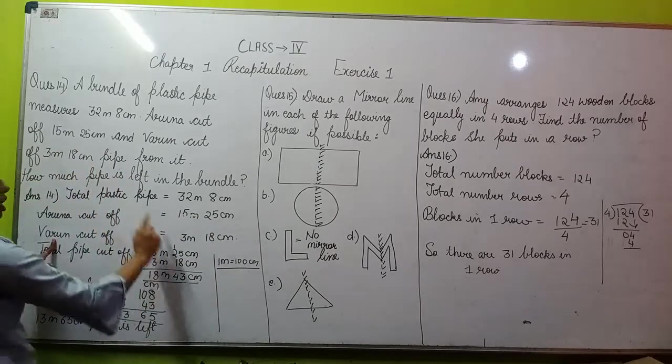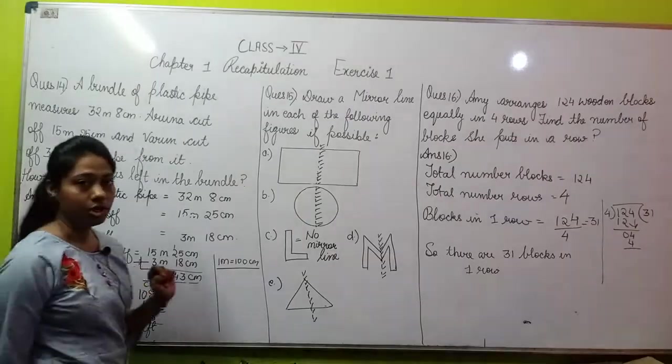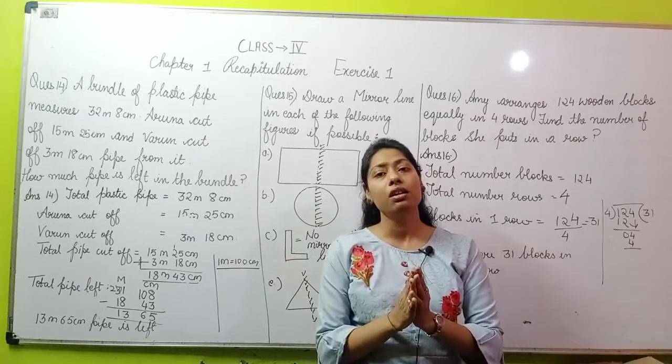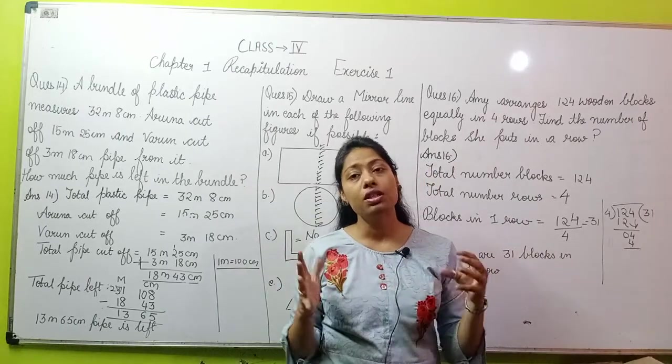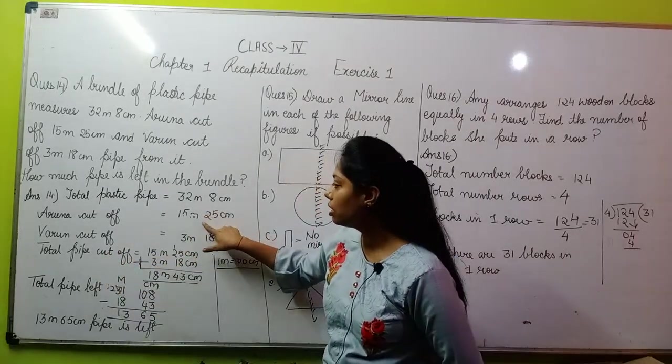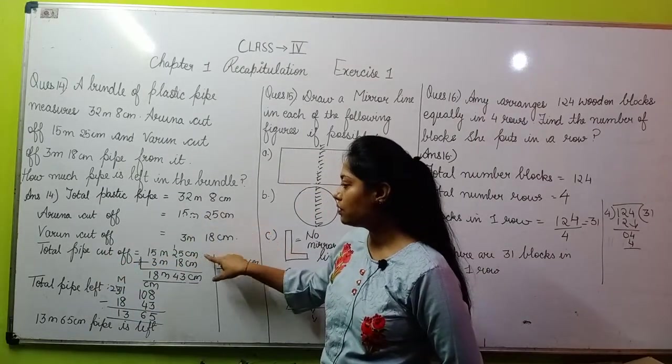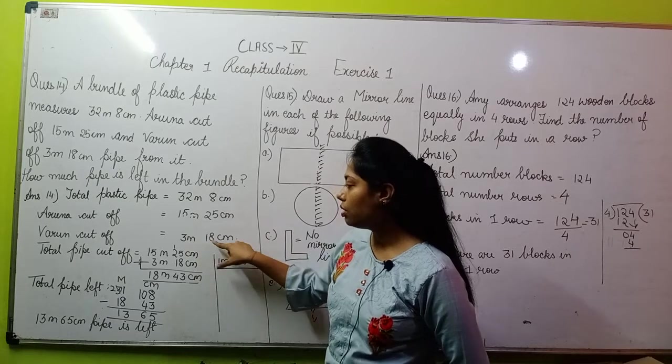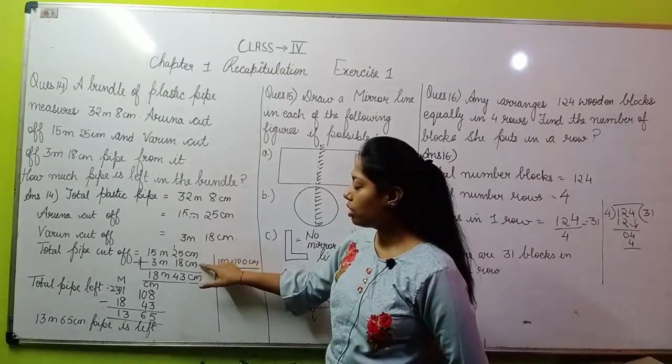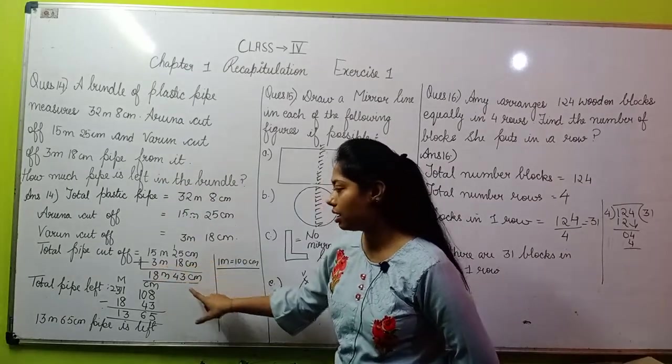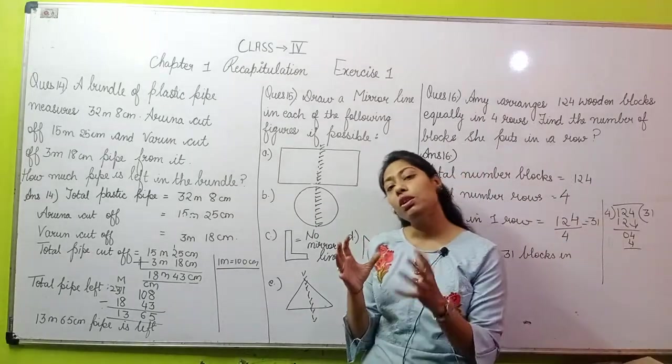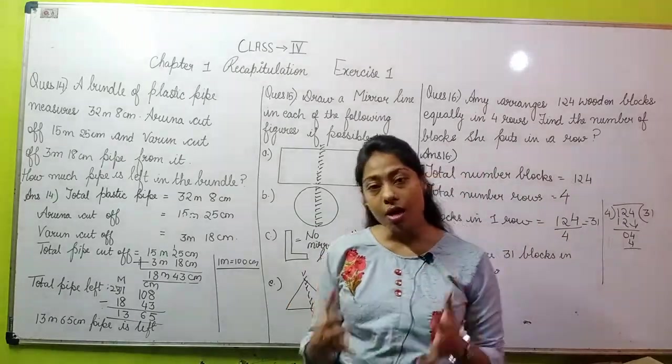Varun cut off 3 meters 18 centimeters. Aruna cut pipe, Varun also cut pipe. Total how much pipe was cut off? Total pipe cut off was 15 meters 25 centimeters from Aruna, 3 meters 18 centimeters from Varun. We add these two pipes together, and the answer is 18 meters 43 centimeters. This is the total pipe that has been cut.